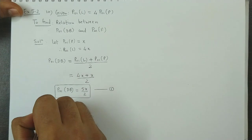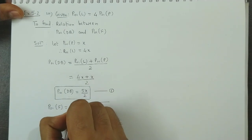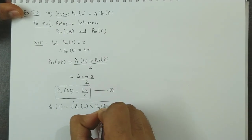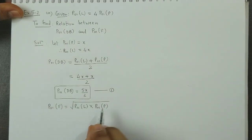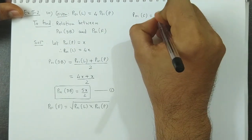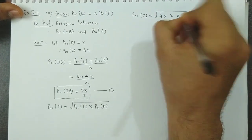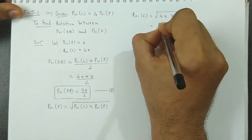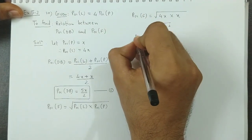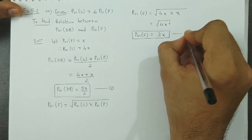Next, we know that Fisher's price index is the square root of Laspeyres' index (P01L) multiplied by Paasche's index (P01P). We substitute the two values: Fisher's index is equal to the root of 4x times x, which is the root of 4x². Taking the square root gives 2x. So Fisher's price index equals 2x. This is Equation 2.